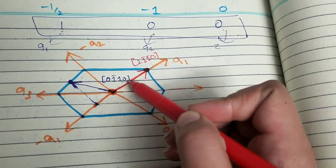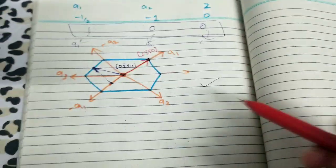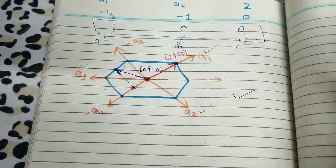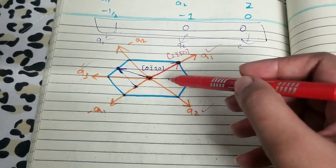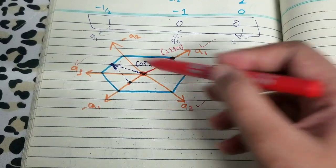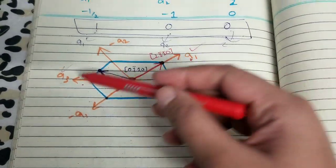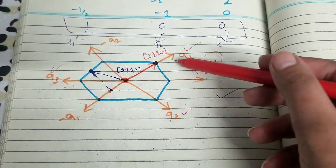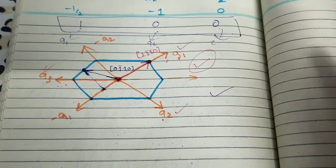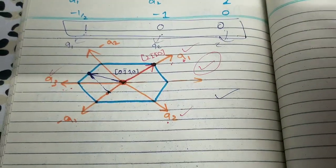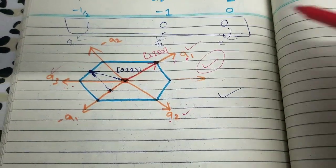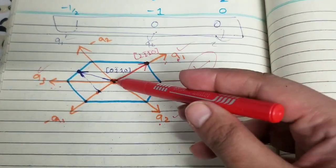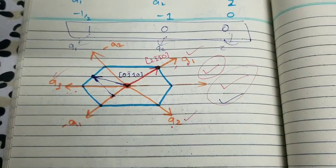This direction [2 1̄ 1̄ 0] is now drawn, and [0 1̄ 1 0] was drawn earlier. Note that the selection of which axis to label as a1, a2, or a3 is arbitrary — it is up to you. Whatever coordinate system you choose, the resultant vector will be correct as long as you are consistent within your coordinate system. This completes the part B solution; parts 3 and 4 will be covered in other videos.